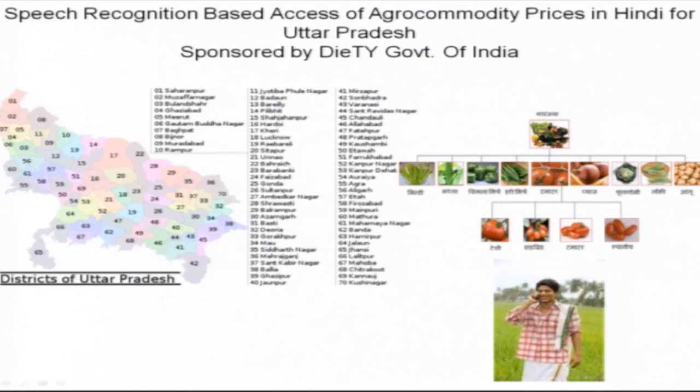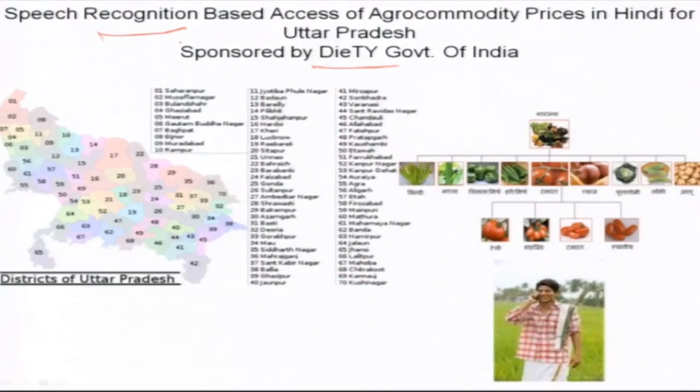One example of a speech recognition application is a system built at IIT Kanpur, funded by the government of India, for speech recognition-based access of agriculture commodity prices for the state of Uttar Pradesh with around 70 districts. A farmer can call a telephone number, the system prompts them to say the name of the district and the crop price they are interested in, and the system gives back the requested information. This shows that speech recognition can be used for socially relevant applications beyond fancy ones like Siri and Google Voice. This concludes the first module on automatic speech recognition; the next part will cover text-to-speech synthesis.